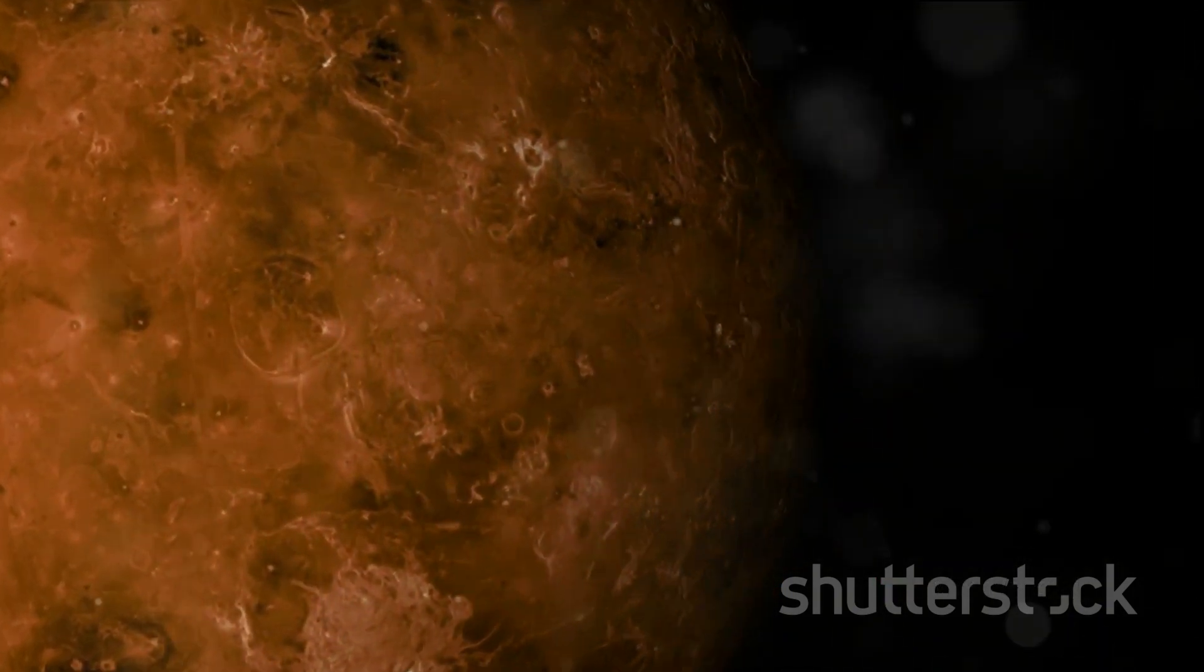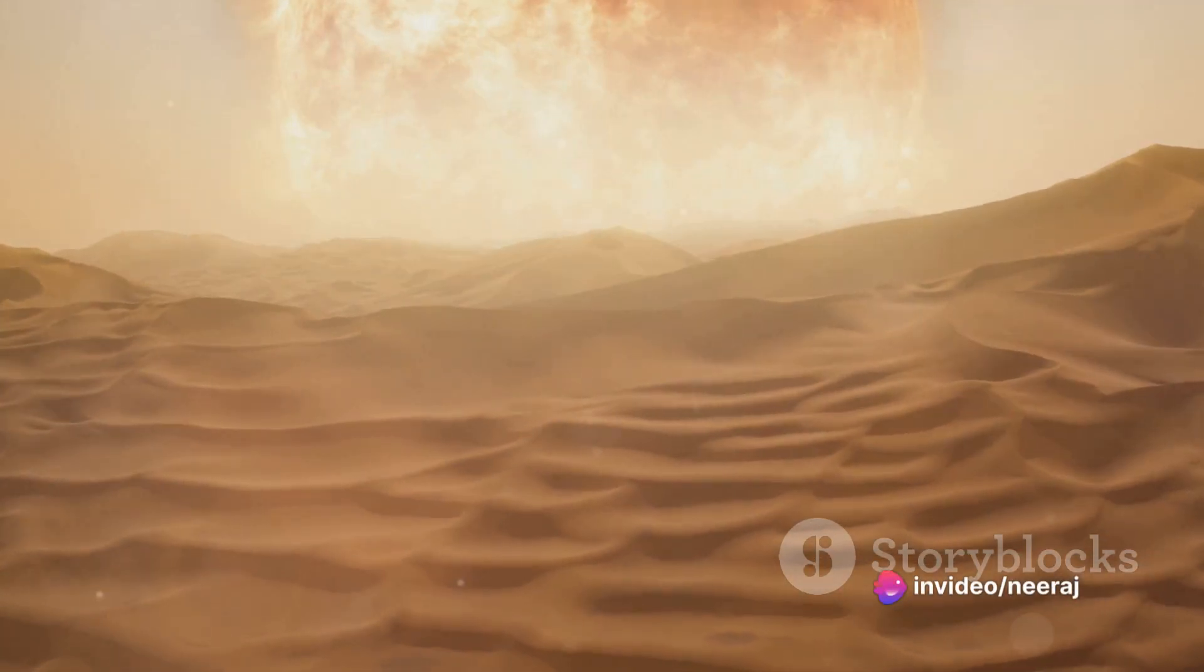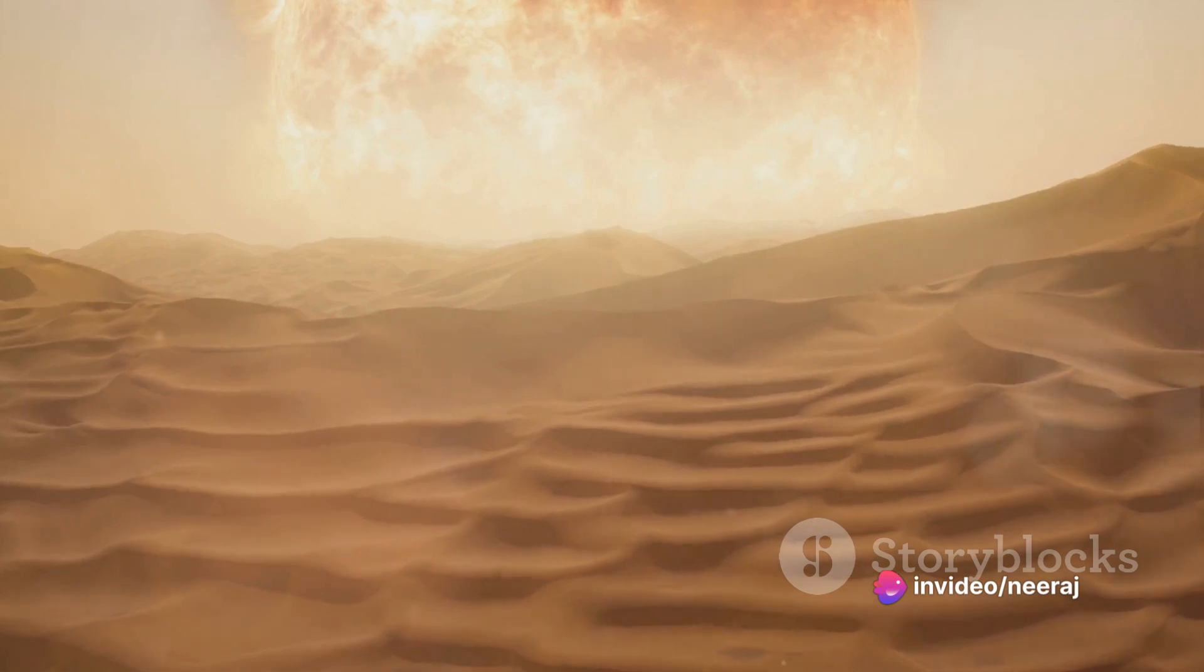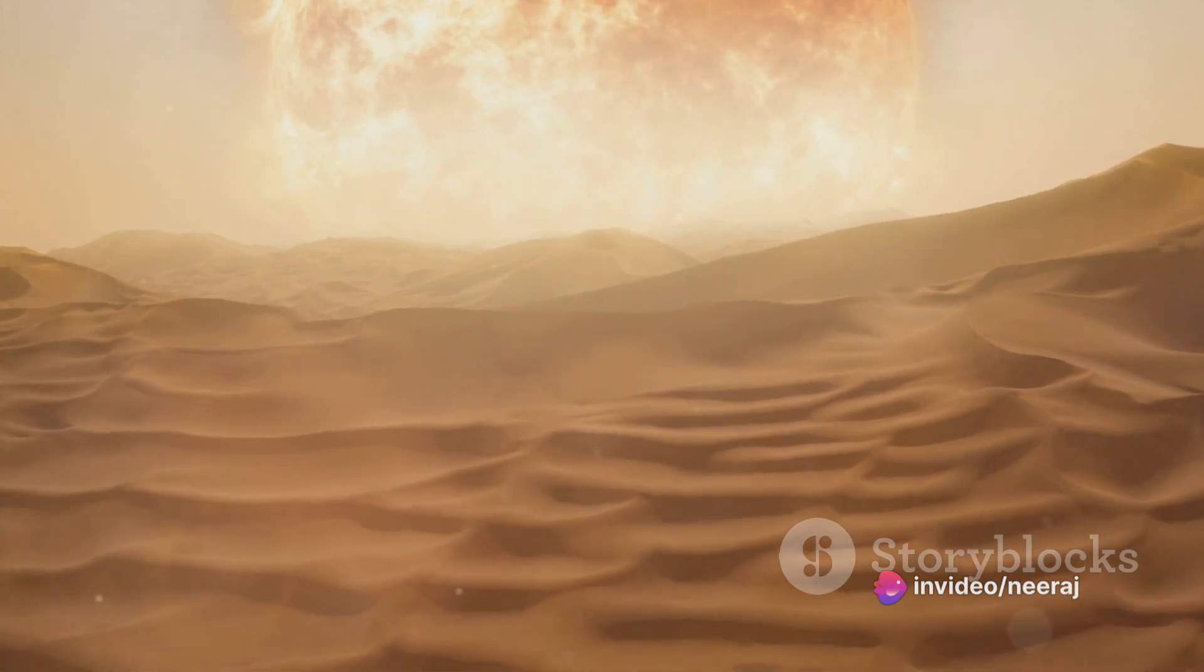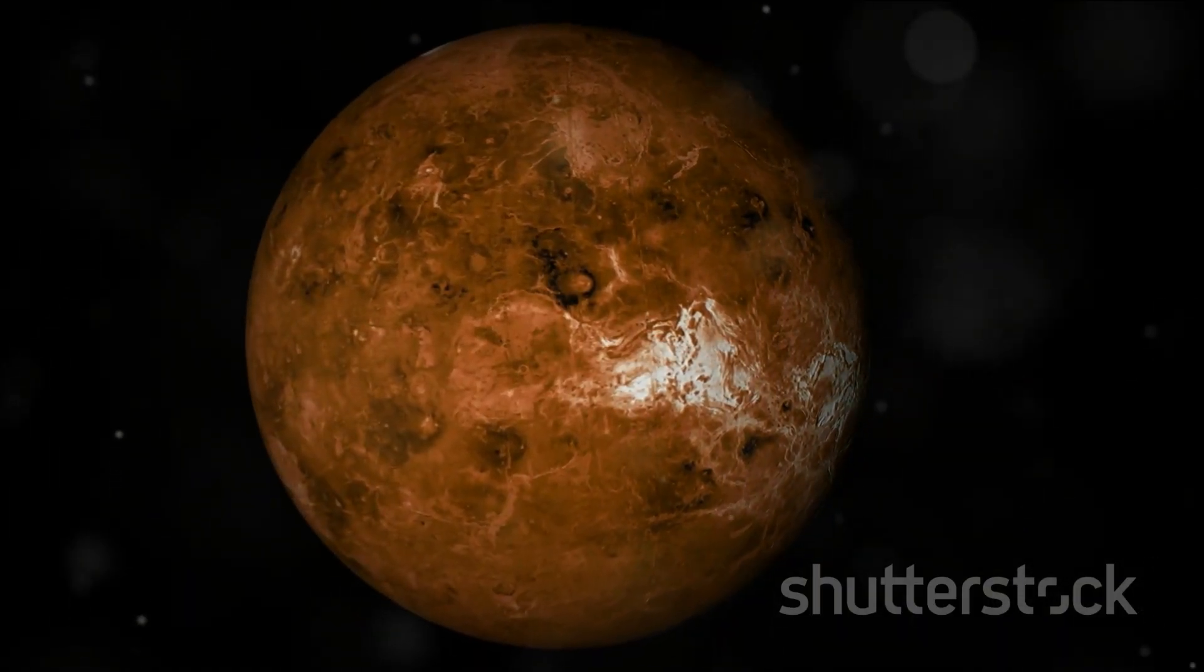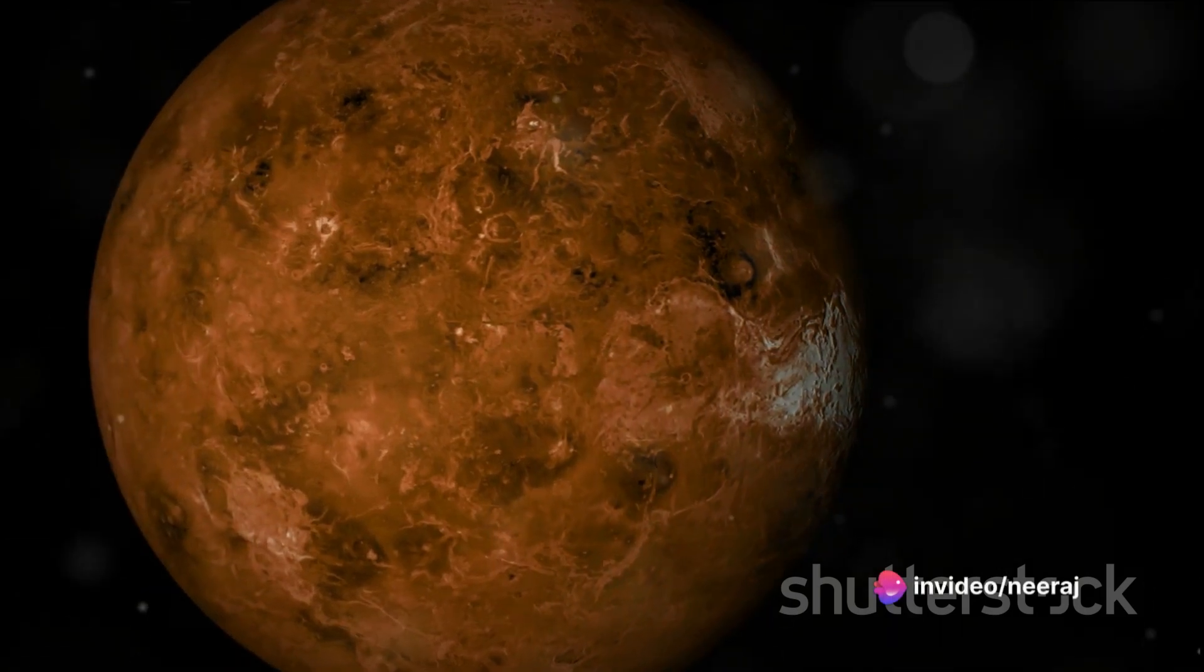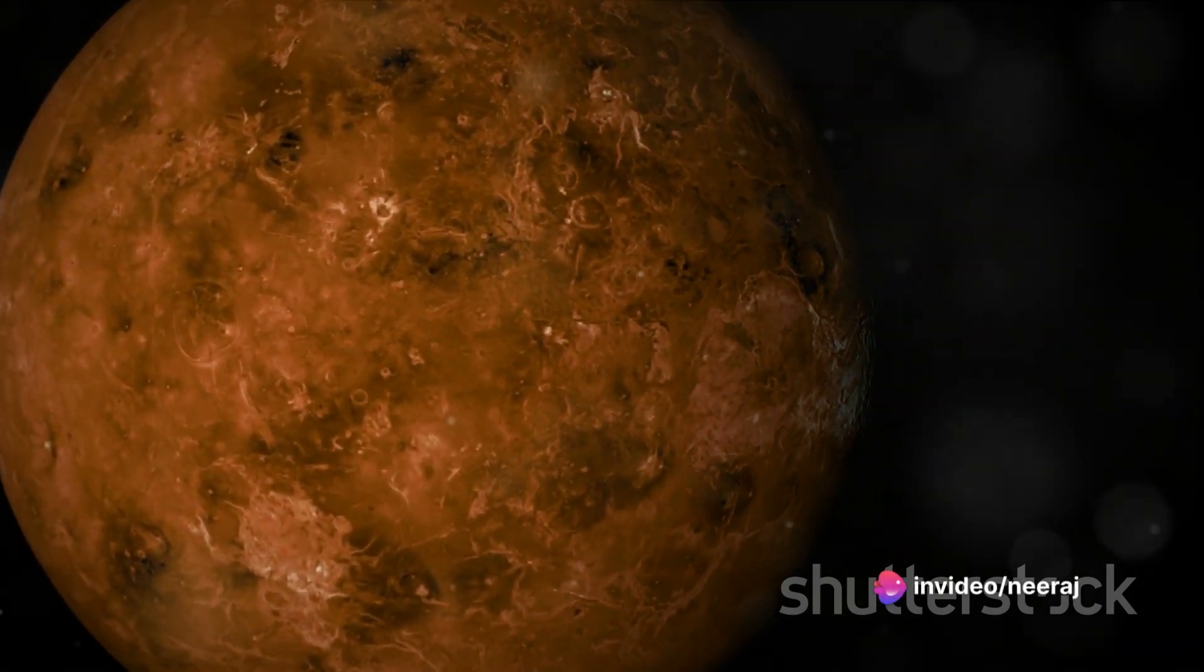And what about water, the elixir of life as we know it? Venus is bone dry. Scientists believe that any water that may have existed on the planet has long since evaporated due to these extreme temperatures. So it seems we have a rocky, hot, and dry world that is nothing like the lush, water-rich, and life-sustaining world we call home.